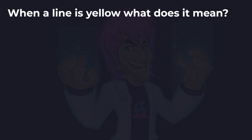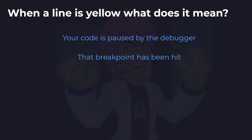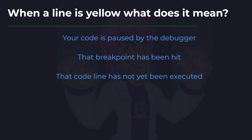So when a line is yellow, what does it mean? Does it mean your code is paused by the debugger, that breakpoint has been hit, or that code line has yet to be executed? We've only just spoken about this. And the answer is all three: your code gets paused by the debugger, the breakpoint is classed as being hit, and that code line has not yet been executed but will be the next line to be executed.